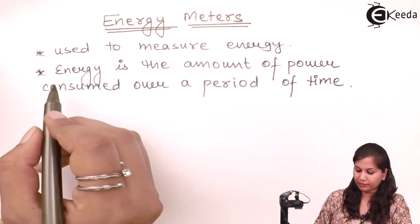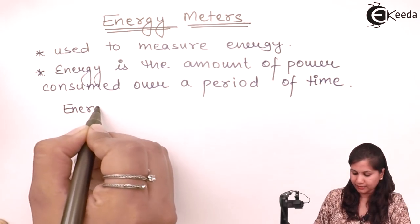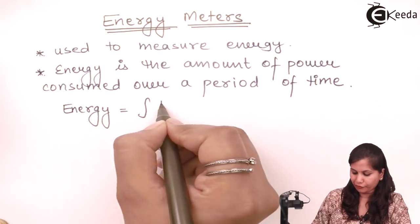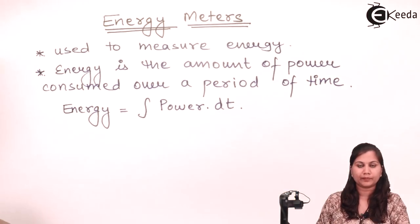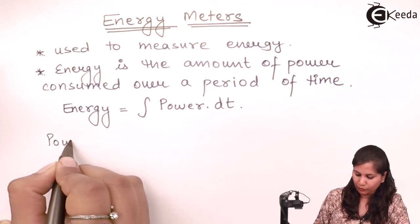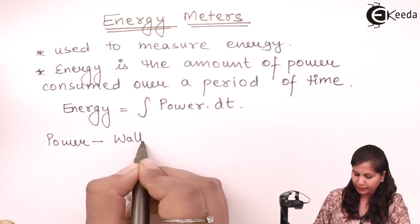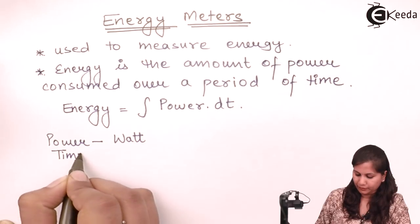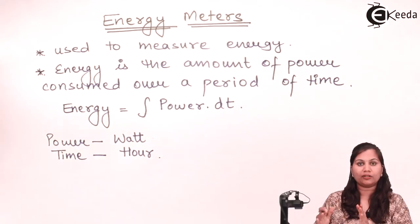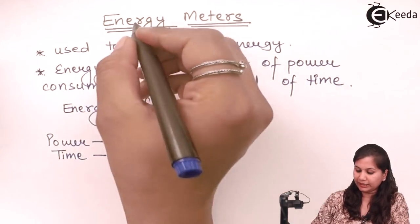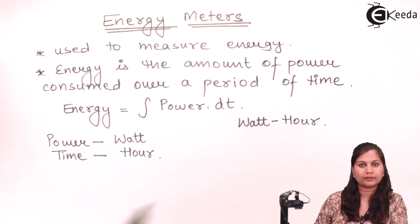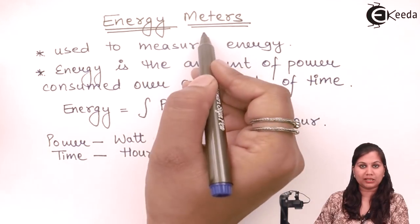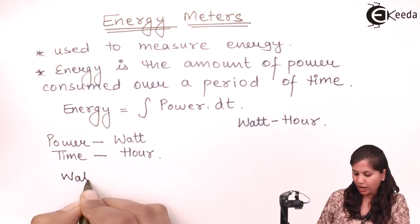The formula for energy is the integration of power with respect to time. The unit for power is watt and for time we use hours. For one hour, the amount of power consumed is the energy. So we can say the unit for energy is watt-hour, and energy meters are also known as watt-hour meters.